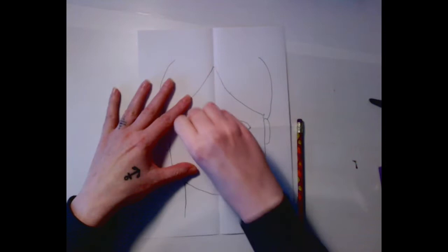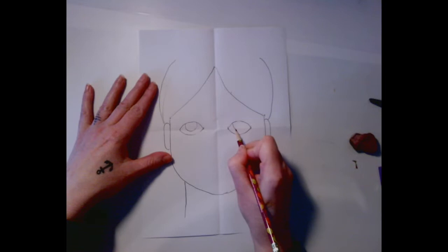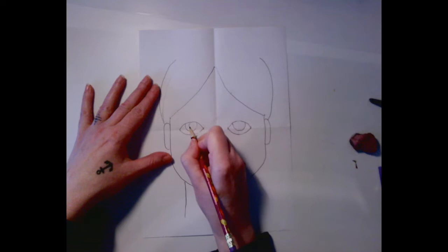Now there's the other iris. Now we're going to put a little teeny circle. That's the pupil, that's the black part of your eye. Little teeny circle in the middle, little teeny circle in the middle on both sides.